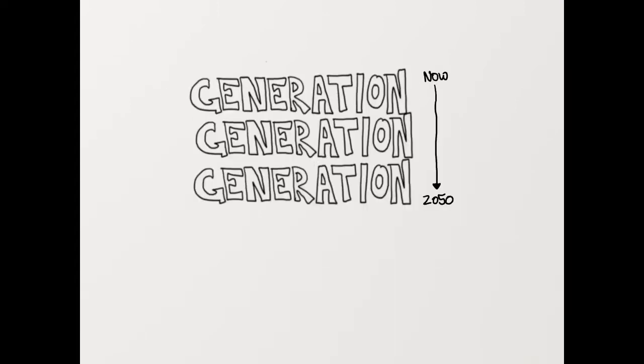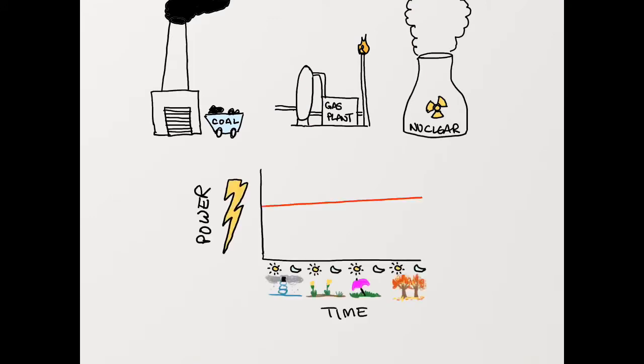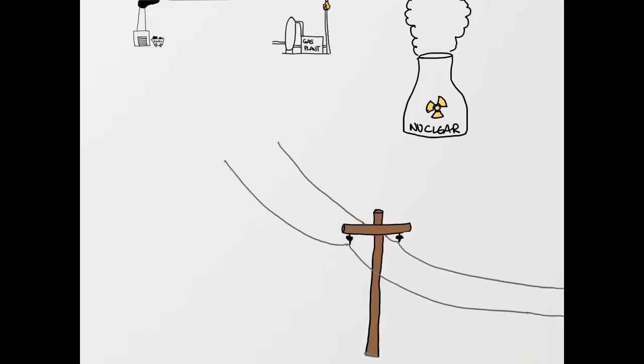Generation is where electricity comes from and it will need to triple between now and 2050. Traditional sources of electricity provide very steady, stable power, day or night, winter or summer. Our systems have been built over time to accommodate this steady supply and distribute it to end users.